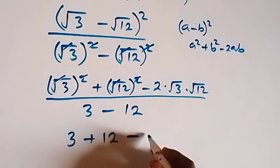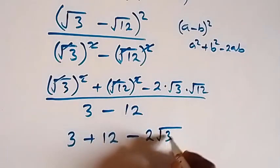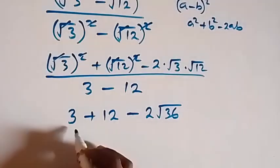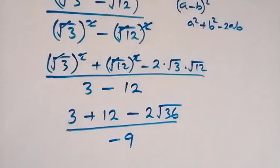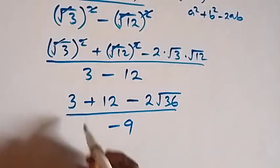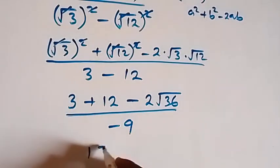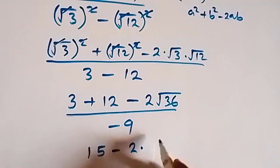From there this is divided by -9, then we have 6, then over -9. Then this is 15 minus 12 over -9.